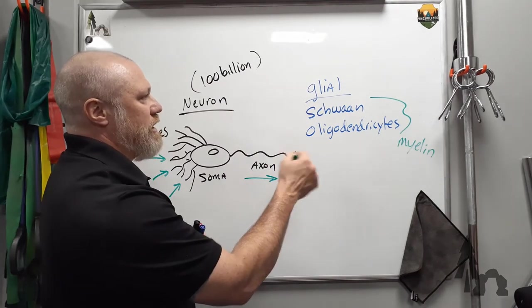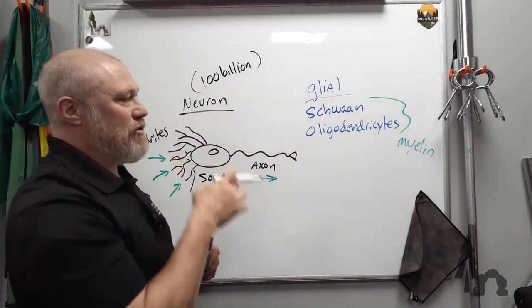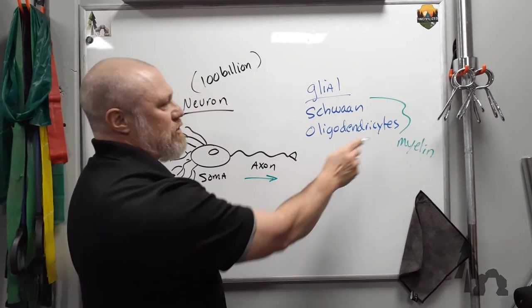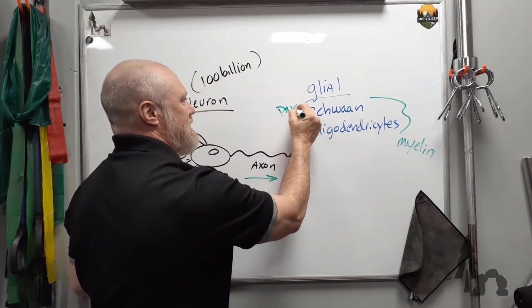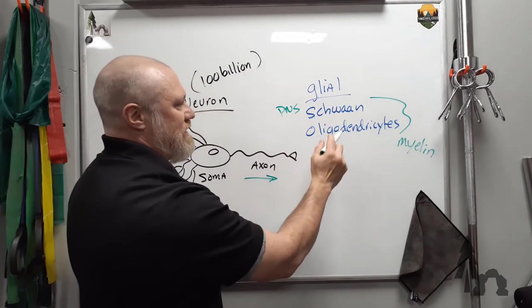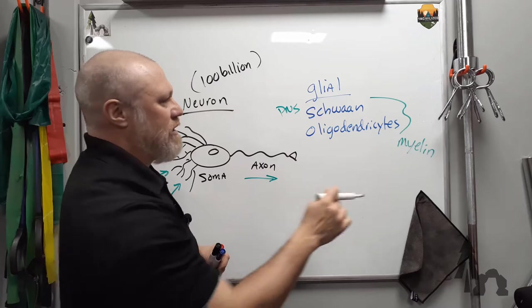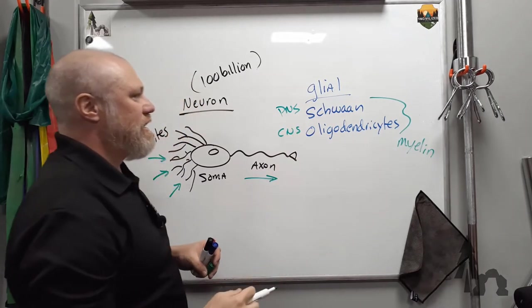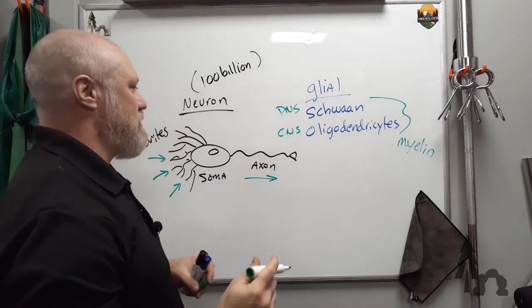Now, in another video, we talked about functional and structural distinctions in the nervous system. The Schwann cells are going to be your myelin-producing cells in the PNS, peripheral nervous system. And the same cell, sort of, in the central nervous system that produces the myelin is going to be the oligodendrocytes.